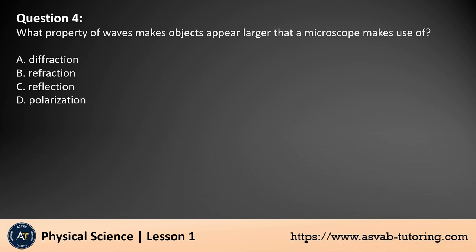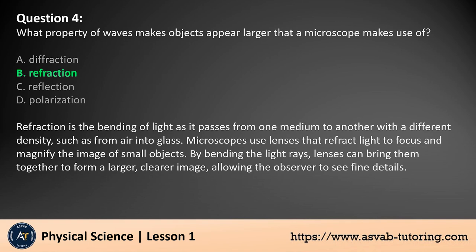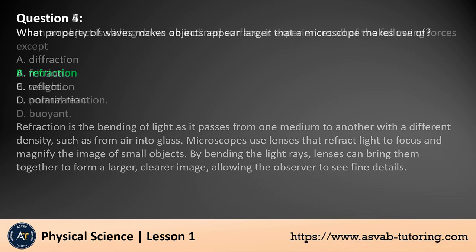Question 4: What property of waves makes objects appear larger that a microscope makes use of? A. Diffraction, B. Refraction, C. Reflection, D. Polarization. The answer is B. Refraction is the bending of light as it passes from one medium to another with a different density, such as from air into glass. Microscopes use lenses that refract light to focus and magnify the image of small objects. By bending the light rays, lenses can bring them together to form a larger, clearer image, allowing the observer to see fine details.